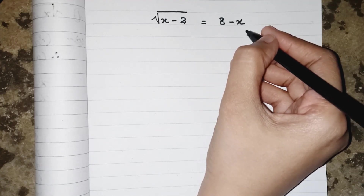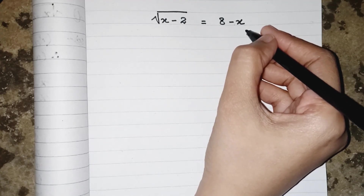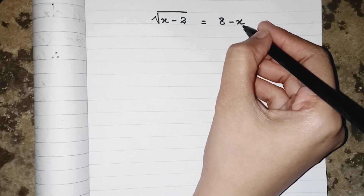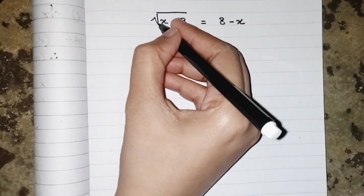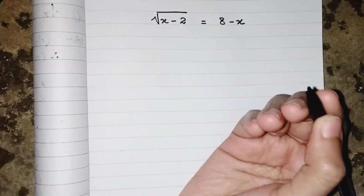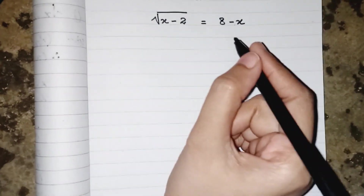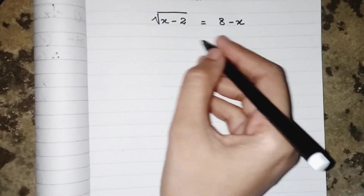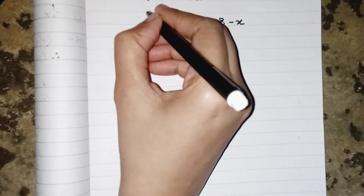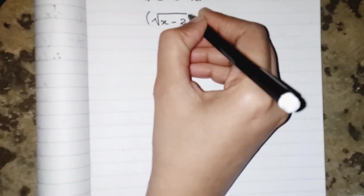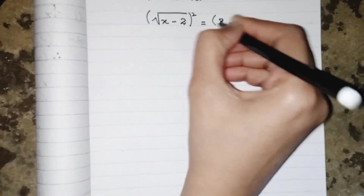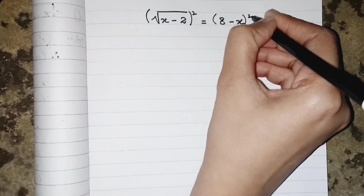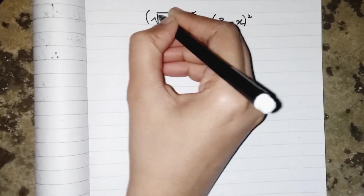Hello everyone, we have to find the value of x. For doing that, we have to remove the root sign. To remove the sign of root, we have to apply squaring on both sides, so the square and root will be cancelled out.